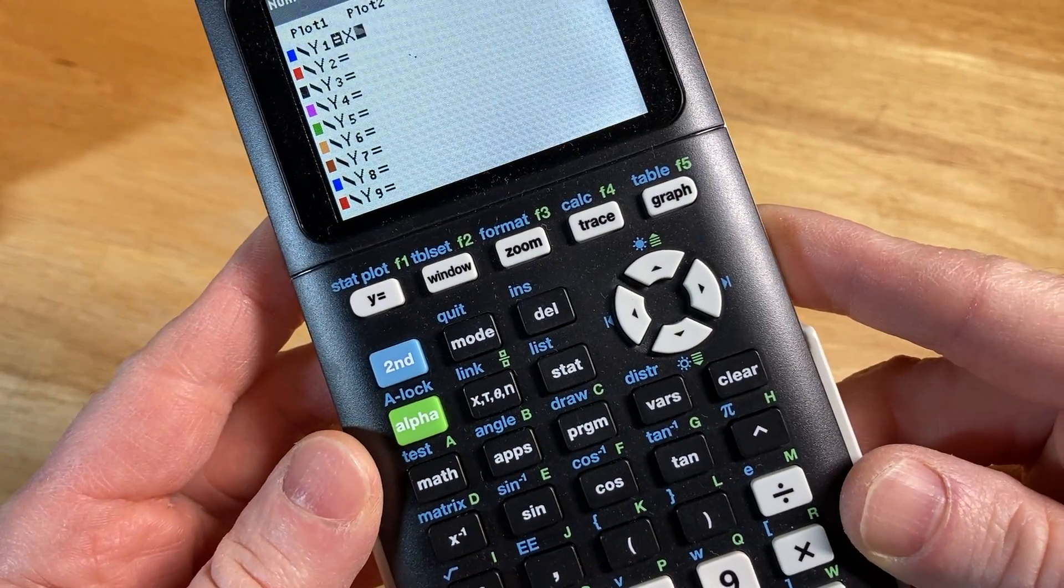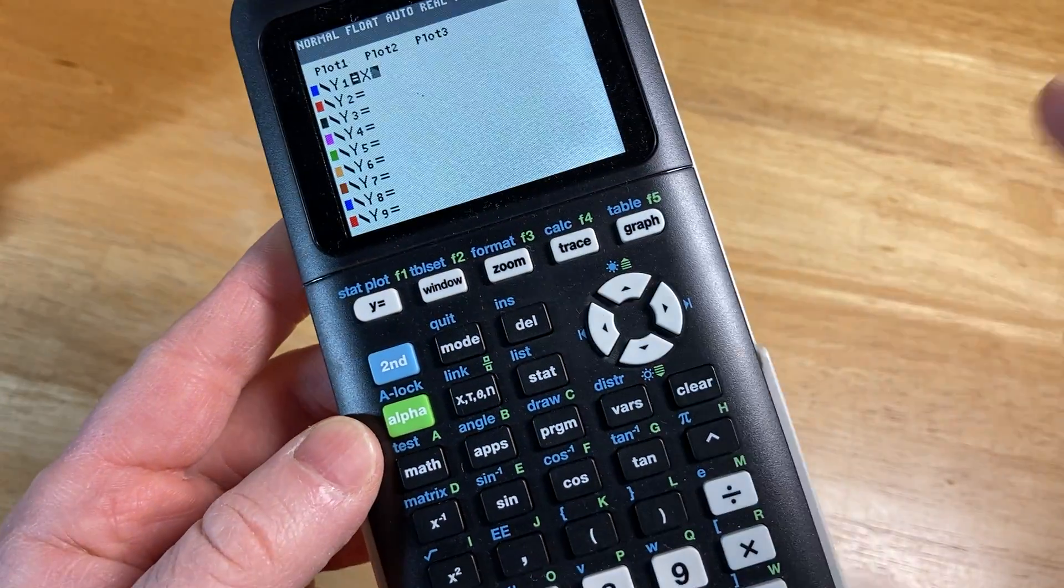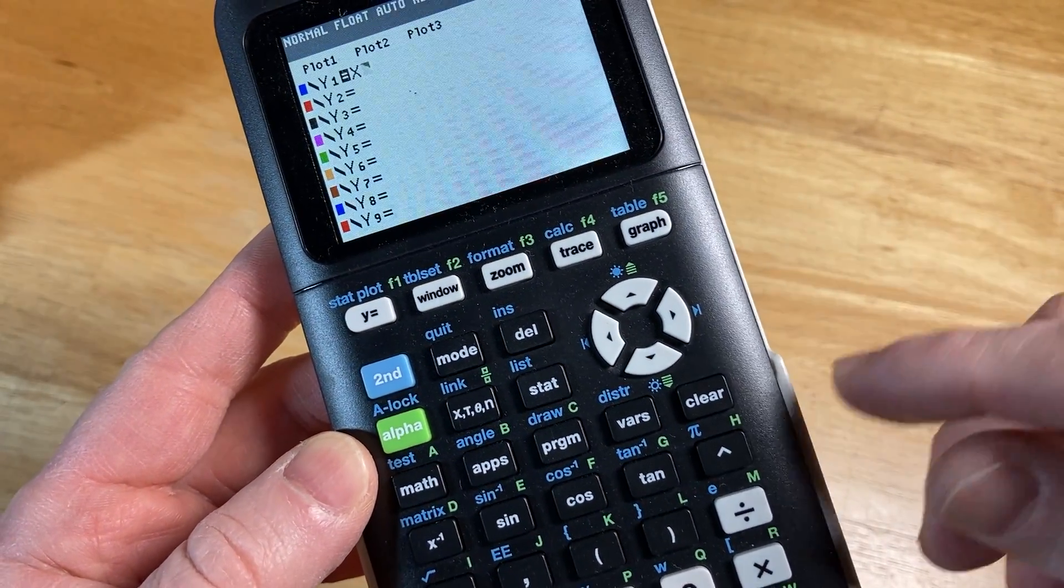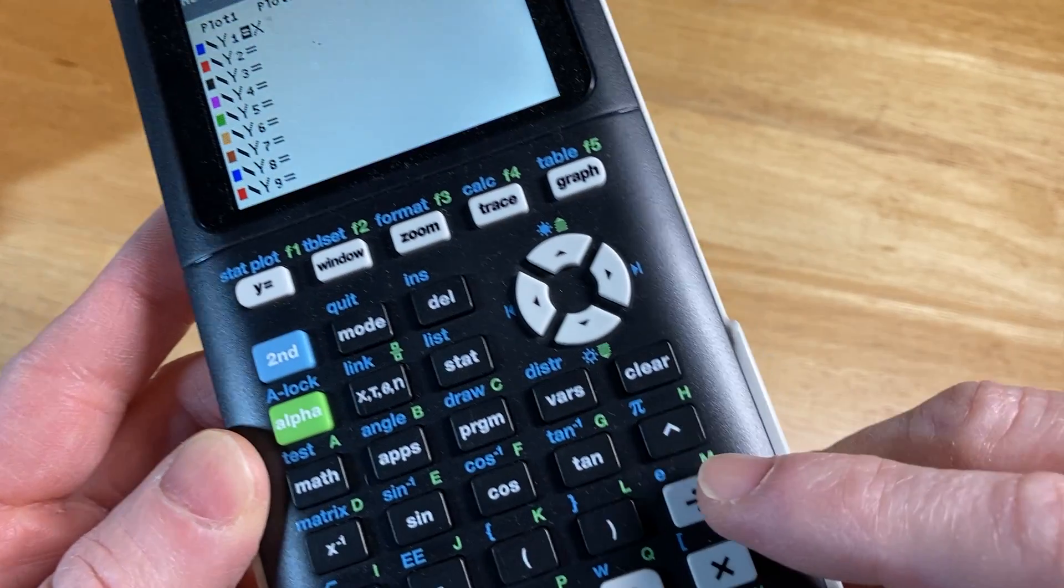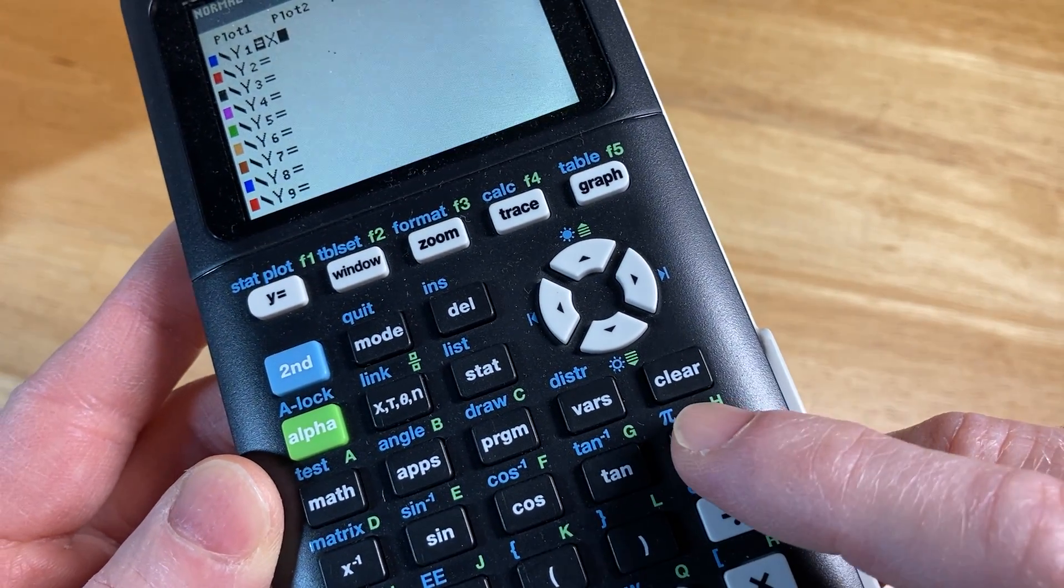And then to do x squared, which is just a basic parabola with the vertex at the origin, we need an exponent. So this is the caret key, so you want to press this.